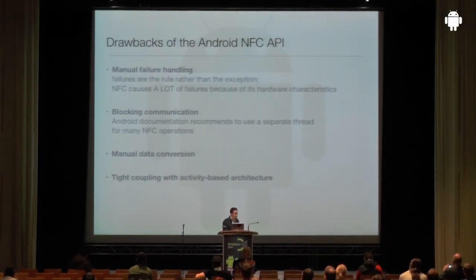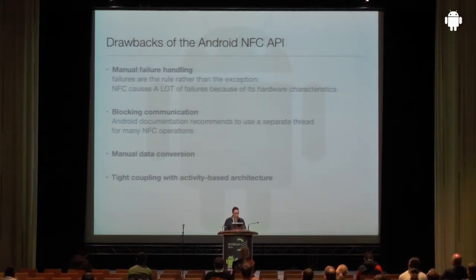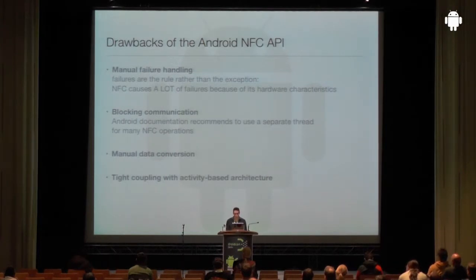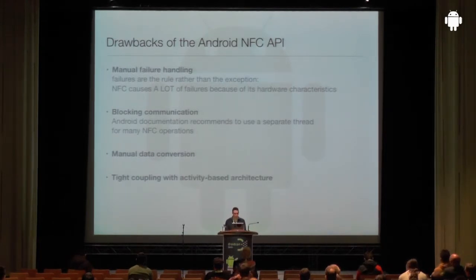The first drawback is manual failure handling. Reading and writing tags frequently fails — you should consider these exceptions the rule rather than actual exceptions. It's enough that the tag is a bit misaligned with respect to the antenna for an operation to fail, and in many cases the same operation will succeed shortly after. With the Android NFC API, the programmer has to manually protect all NFC operations with exception handling code, which complicates the application code and is not easy to maintain.